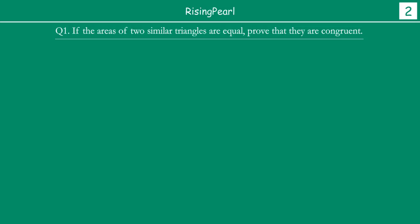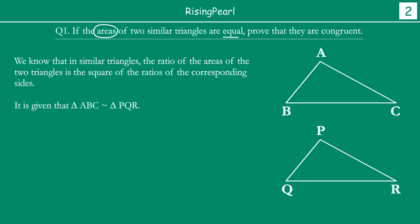Our first question is: if the areas of two similar triangles are equal, prove that the triangles are congruent. So let's draw two triangles — triangle ABC and PQR — and these two triangles are similar, and what is given is their areas are equal.